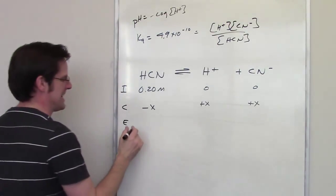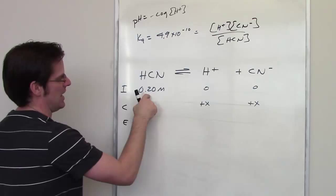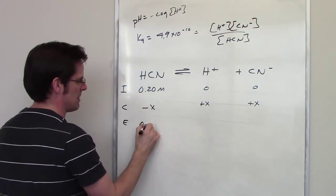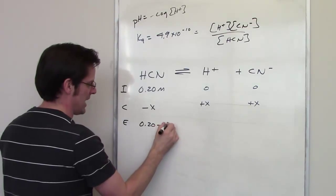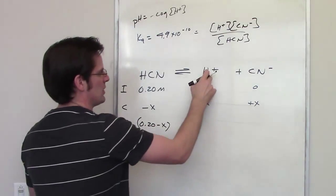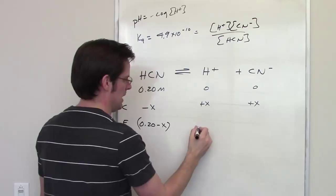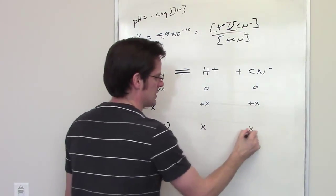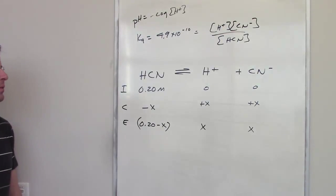What's the final concentration going to be at equilibrium? Well, all I do is add the first row to the second row. So the final concentration of HCN is going to be 0.2 minus x. The final concentration of this is going to be 0 plus x, or just x. And the final concentration of this will also be the same. That's our ICE table.